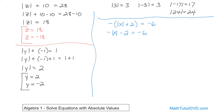We want to get the absolute value of x by himself. First we handle the negative 2, so we add 2 to both sides. Minus 2 plus 2 goes to 0 on the left-hand side, leaving negative absolute value of x. On the right-hand side, negative 6 plus 2 — when you add a negative and a positive, you subtract them, so 6 minus 2 is 4, and the sign goes with the larger absolute value, which is negative. So you have negative 4.